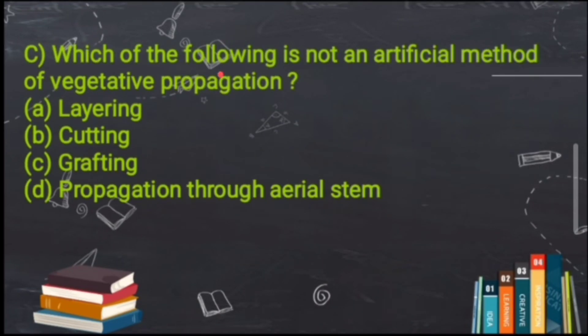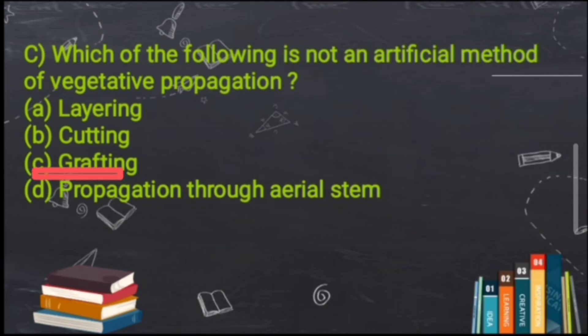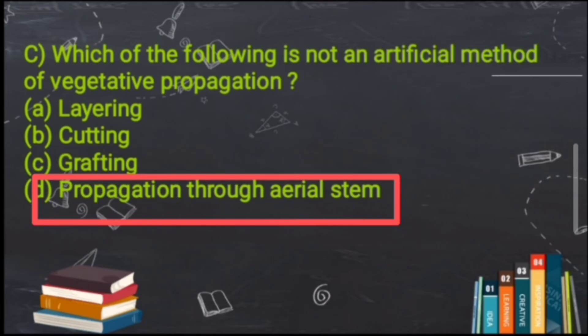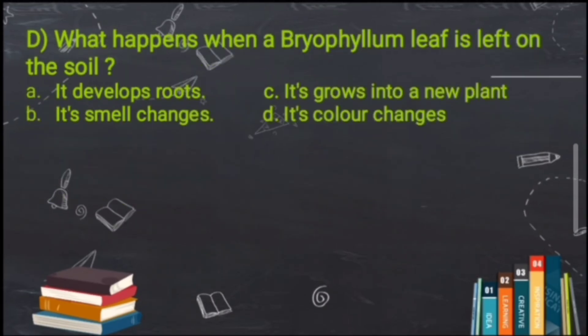Third question: Which of the following is not an artificial method of vegetative propagation? (A) layering, (B) cutting, (C) grafting, (D) propagation through aerial stem. Layering, cutting, and grafting are all artificial methods. Propagation through aerial stem is a natural process, not an artificial method. So option D is correct.